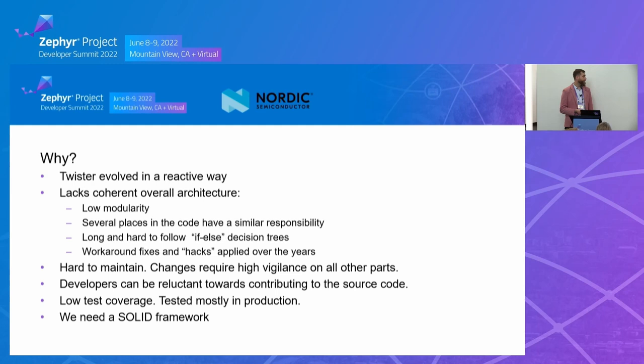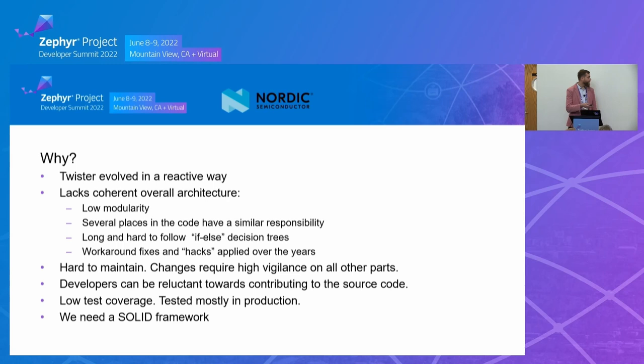This is pretty harmful for an open source project. There is also quite low test coverage of Twister itself, which means it is often tested in production. We've seen several times that after shifting or fixing something in Twister, or adding a new function, CI starts failing for many companies and also for Zephyr itself. So all of this means we want a solid framework to continue with high quality for Zephyr.